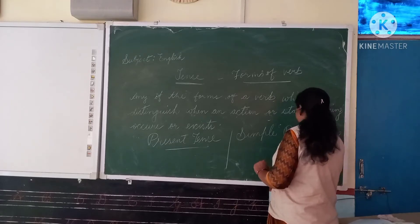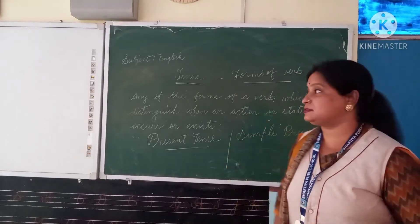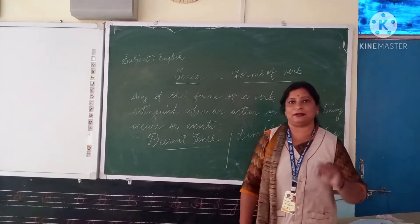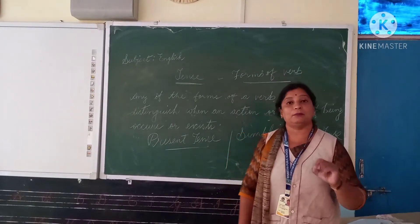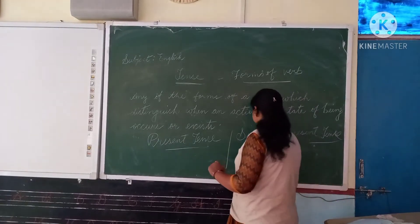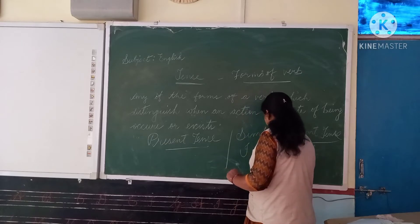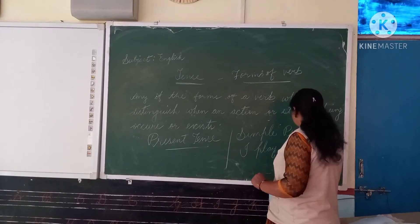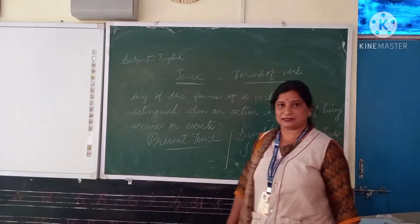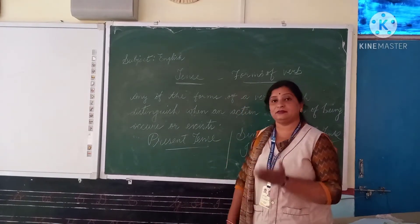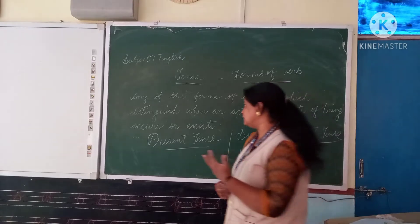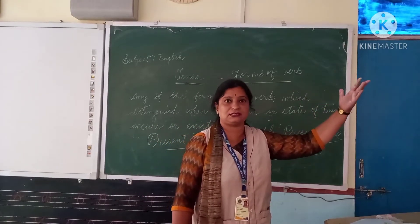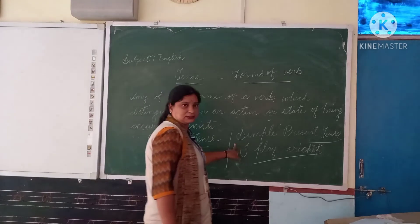So what is simple present tense? Simple present tense means something that happens every day — it is a part of our daily routine. For example: I take bath, I go to school, my mother cooks food, my father goes to office, I play cricket. These are examples of simple present — things you do in your daily routine. Any habitual action, for example the earth revolves around the sun, the sun rises in the east — that is also simple present tense.